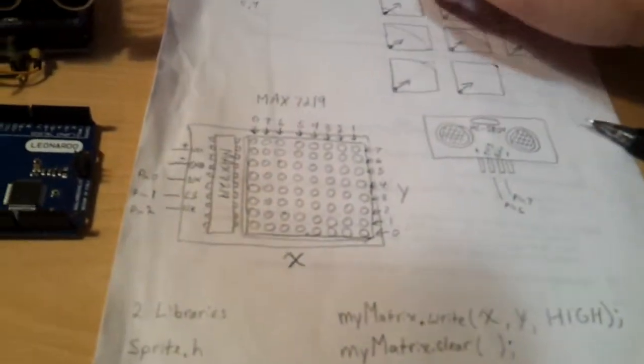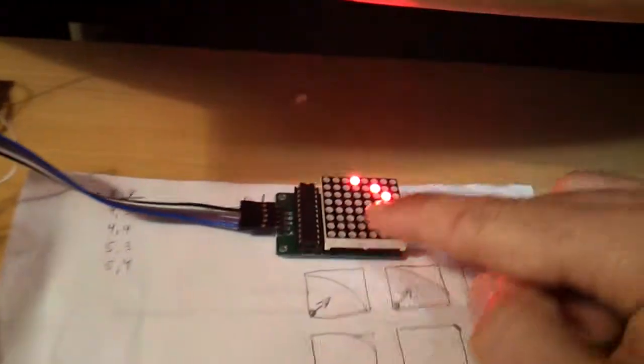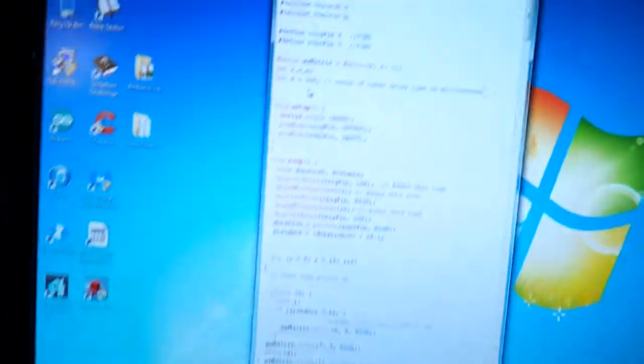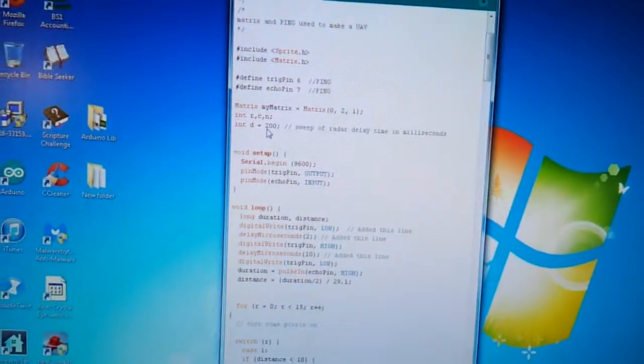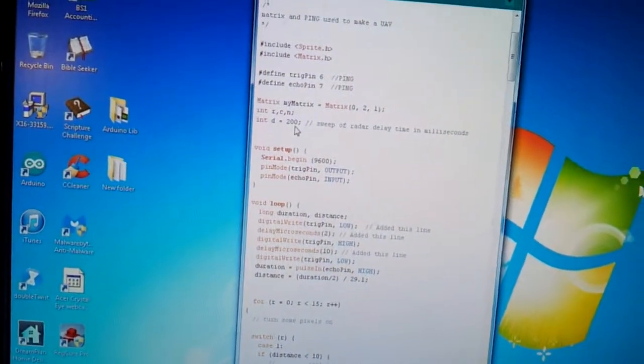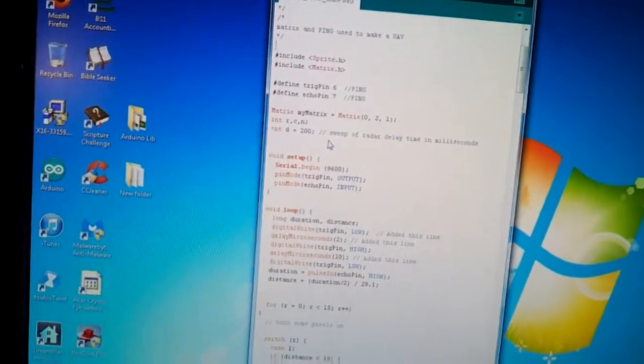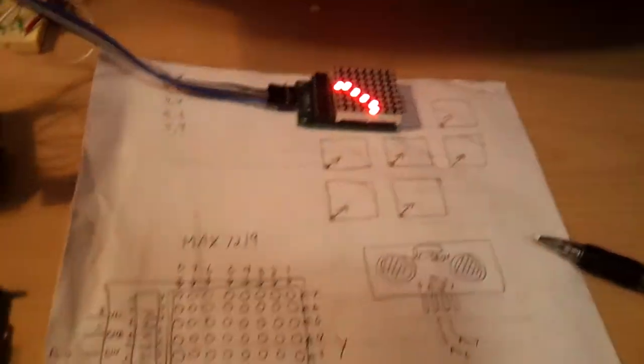You can speed up the sweep process on this. As it sweeps across, you can speed it up. I have it set to a 200 millisecond sweep, so one-fifth of a second right here. You can change it to like 100 and it would sweep twice as fast, so you go boom boom boom really fast.